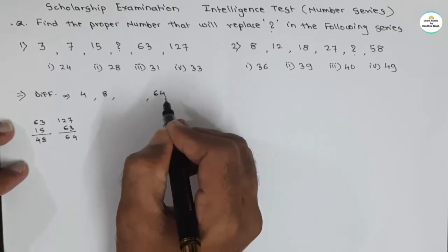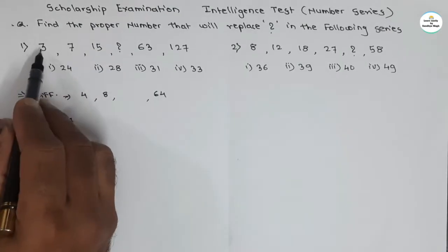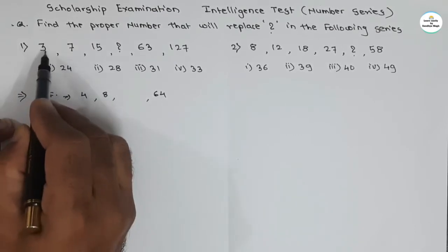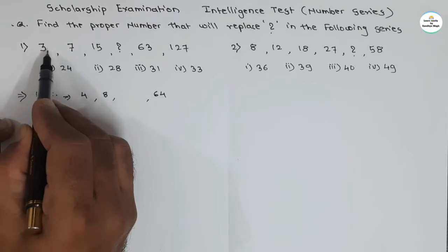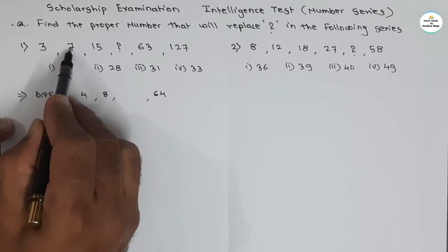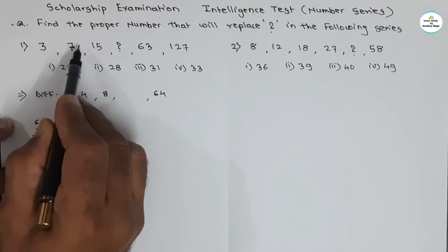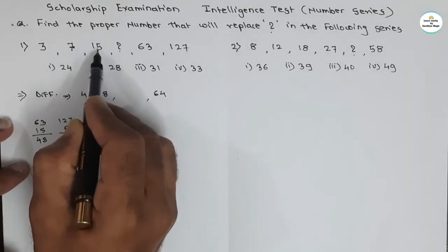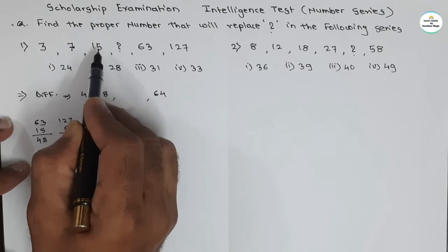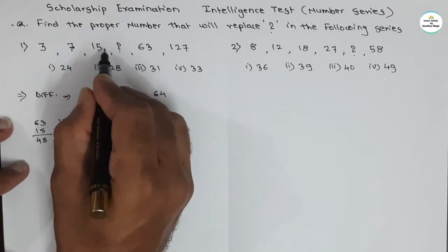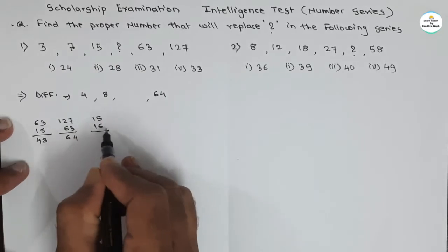What is the observation? The first number is 3, and the next difference is 4 — the immediate next number to 3. If we add the next immediate number, we get the next number in the series. Similarly, the number is 7; if we add the next immediate number, 8, we get the next number, 15. Similarly, if we add 15 to its next immediate number, 16, we get 31.